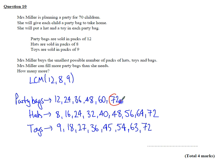So I get 72, it's the lowest common multiple. Okay, so if she buys 1, 2, 3, 4, 5, 6 packs of party bags, and then she buys 9 packs of hats, and then she buys 8 packs of toys, she will end up with 72 party bags, which will be complete.